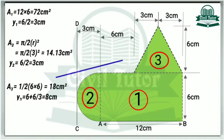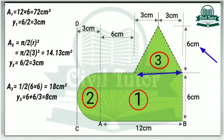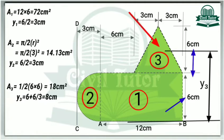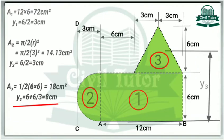A3 is the area of this triangle which will be equal to 6 centimeter into 6 centimeter divided by 2, equal to 18 centimeter square. Let Y3 be the centroidal distance of this area 3 from bottom line AB, which will be equal to 6 centimeter plus the centroid of this triangle which is H by 3, equal to 6 by 3. So we will get the value of Y3 equal to 8 centimeter.